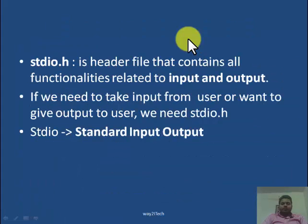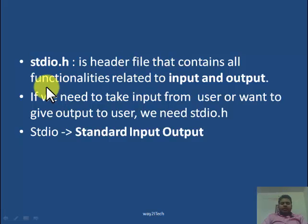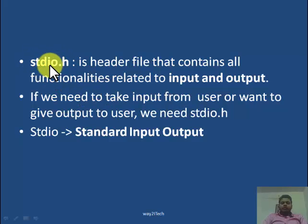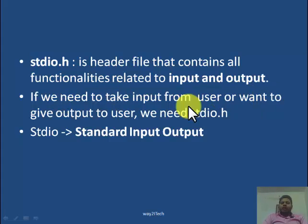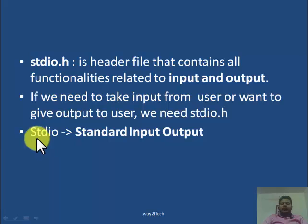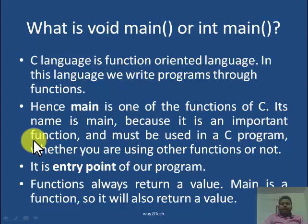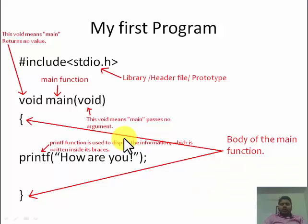stdio.h is a header file that contains all the functionalities related to input and output. If you have to take input from the user or give output to the user, you need the library file stdio.h. stdio means standard input output — various functions related to input and output are present inside stdio.h. We will see which functions are present in this header file.